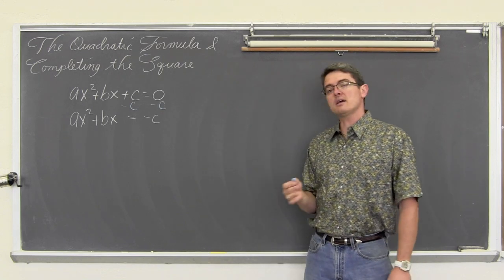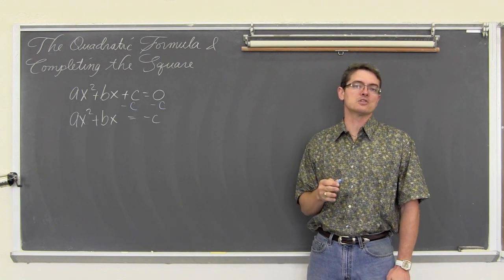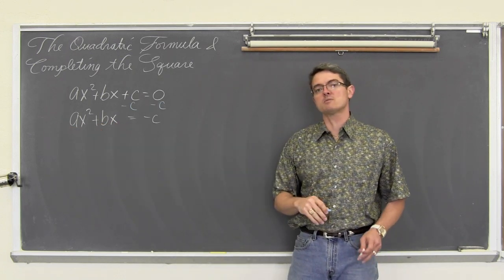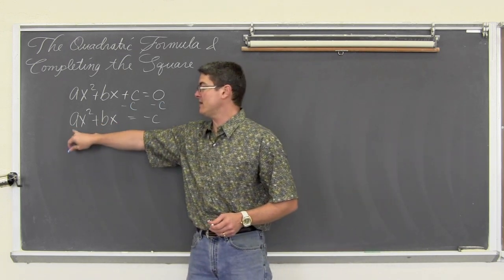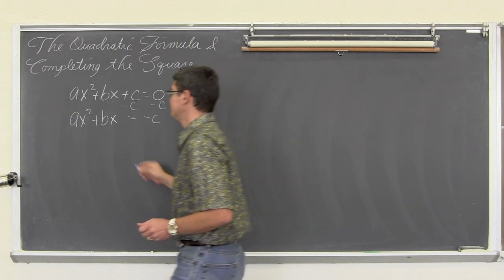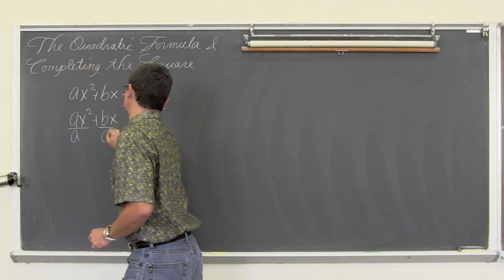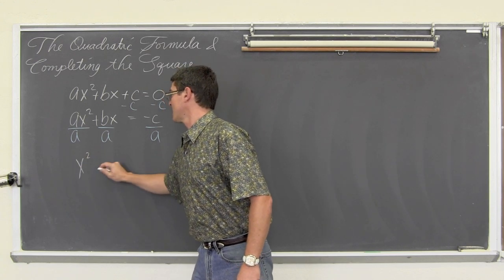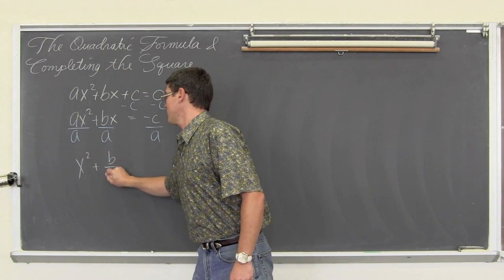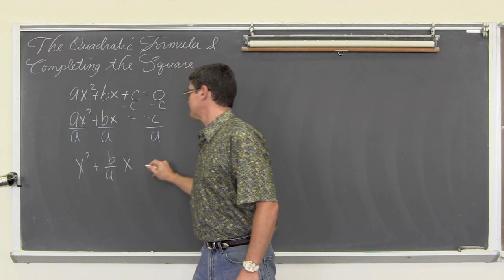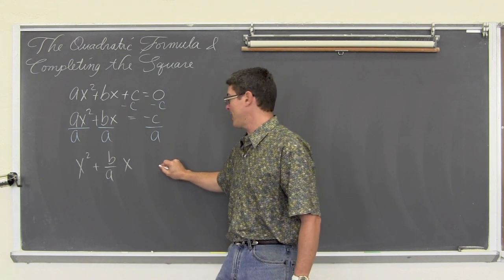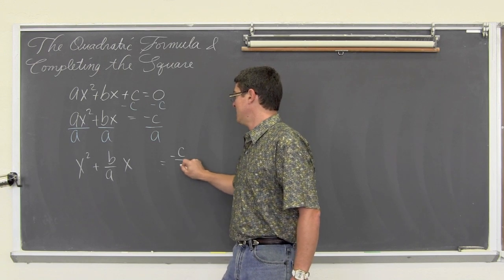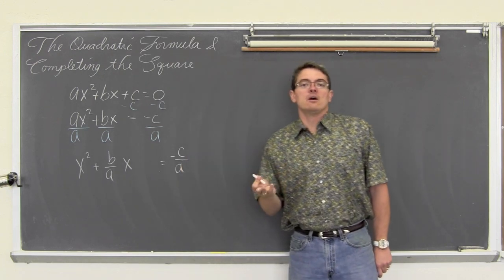Now you cannot complete the square unless your leading coefficient is equal to one. So we are going to divide all of our terms by a so that we have that leading coefficient of one that we need. And we get x squared plus b over a times x equals negative c over a.